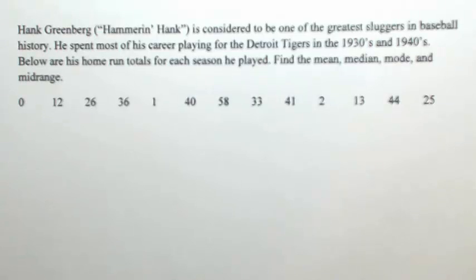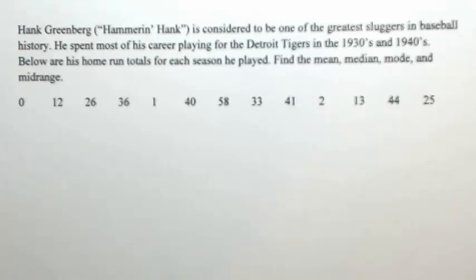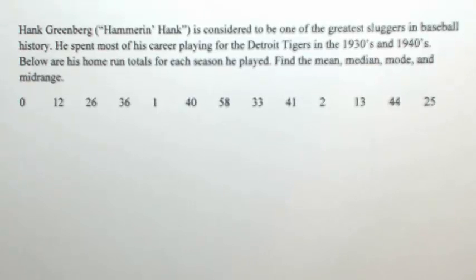Hank Greenberg, nicknamed Hammer and Hank, is considered to be one of the greatest hitters in baseball history. He spent most of his career playing for the Detroit Tigers in the 1930s and 1940s. Below are his home run totals for each season he played.